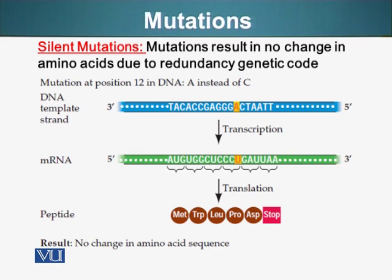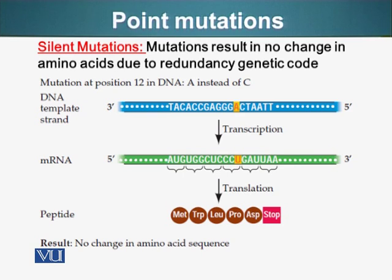Chromosomal mutations could be changes in the position or orientation of a segment of DNA, or deletion of a segment of DNA. We talked about some of these: translocations, deletions, inversions, etc. So, let's look at a couple of categories of point mutations.